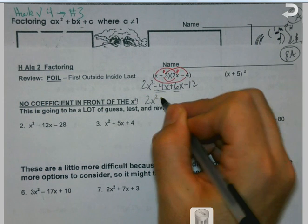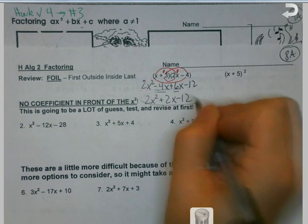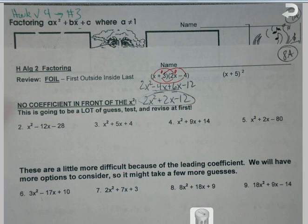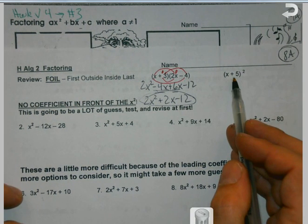And then we just combine our like terms in the middle. A lot of you can do this in your head and that's fine. I don't have an issue with that. The one thing I do tell people to be cautious of though, is when they get a squared term.